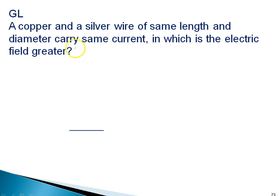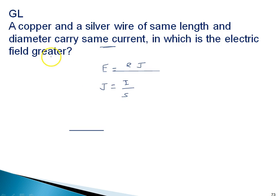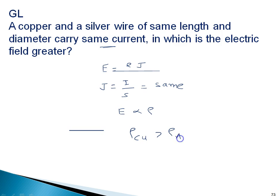The current density is given by current divided by area. In the question, both wires carry the same current and have the same length and diameter, so the area is the same. This means the electric field E totally depends on resistivity. The resistivity of copper is greater than that of silver, so E for copper is greater than E for silver.